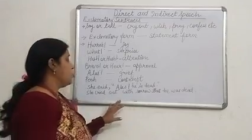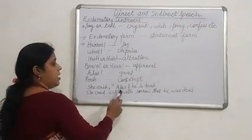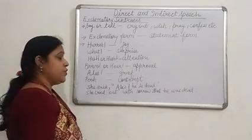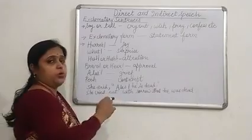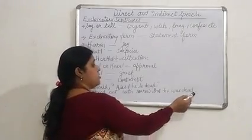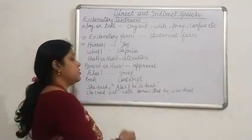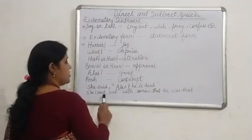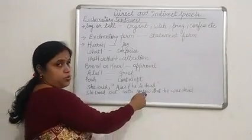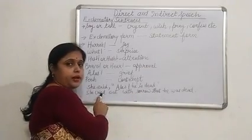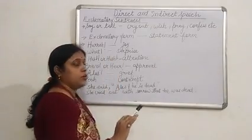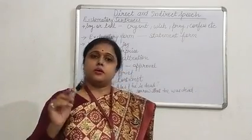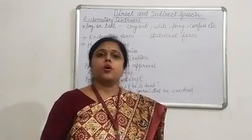One example: 'She said, Alas! He is dead.' The word 'alas' shows grief or sorrow, so we write: 'She cried out with sorrow that he was dead.' You can see there are no exclamation marks, and 'alas' is replaced because it expresses sorrow — so 'cried out with sorrow' is written in place of 'said to' or 'tell'. I hope you all have understood direct and indirect speech well. Please watch both videos together to understand it fully. Thank you, God bless you, and take care.